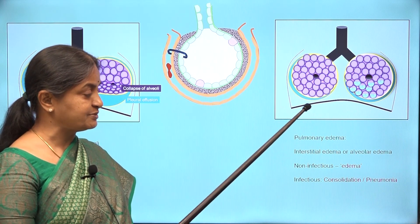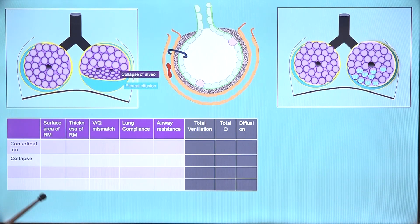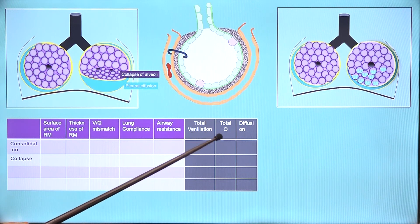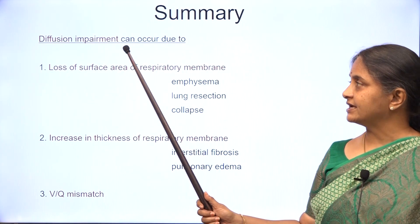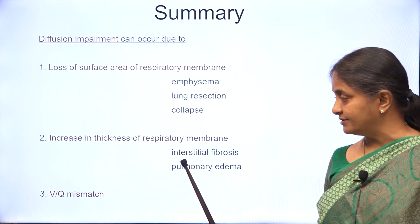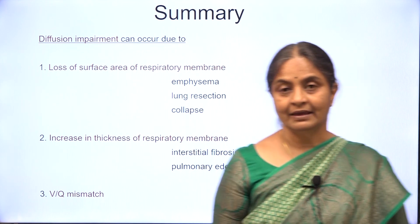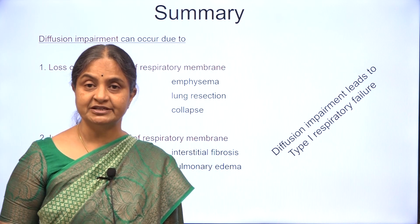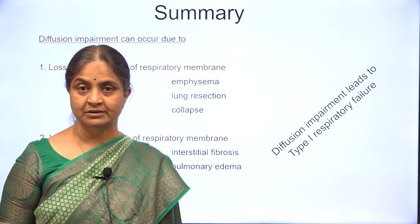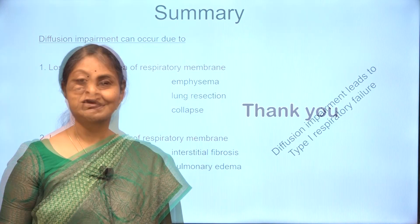So it amounts to thickening of the respiratory membrane. You could do a similar table for these conditions to understand what happens to each — whether there is diffusion impairment or ventilation impairment, and what about perfusion. In summary, diffusion impairment can occur due to loss of surface area of the respiratory membrane, increase in thickness of the respiratory membrane, or ventilation-perfusion mismatch. We should remember that diffusion impairment causes type 1 respiratory failure where arterial oxygen concentration can be lower — hypoxia can occur — but arterial carbon dioxide concentration can be normal. There is no hypercapnia. Thank you for your attention.